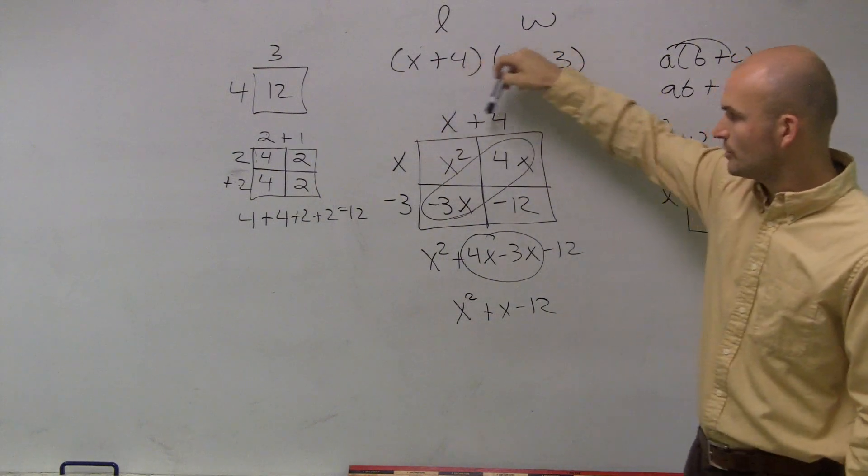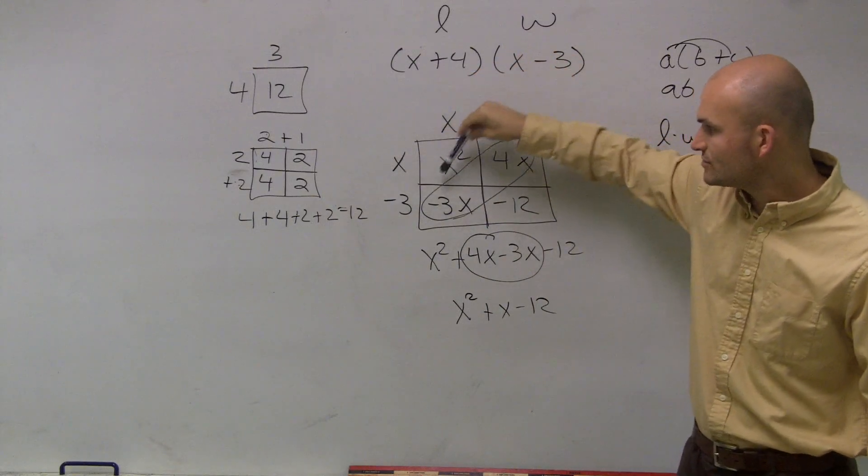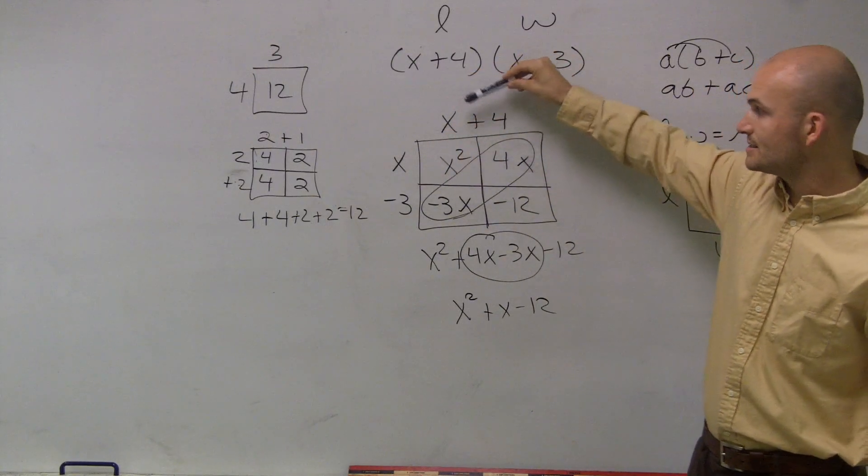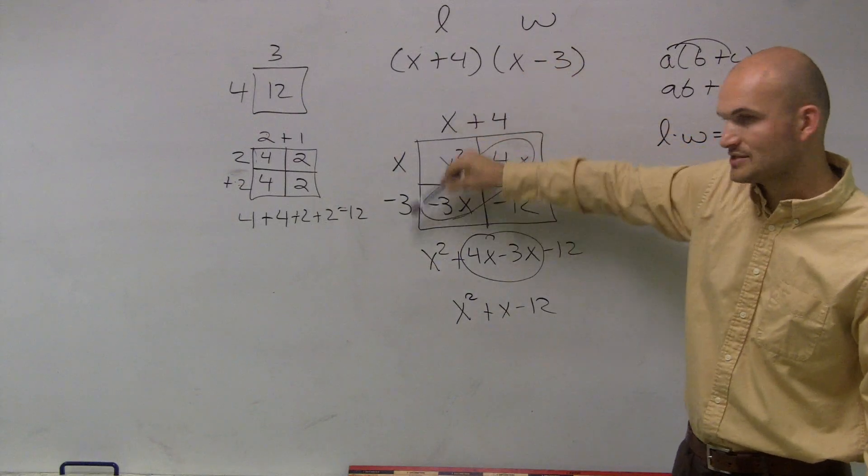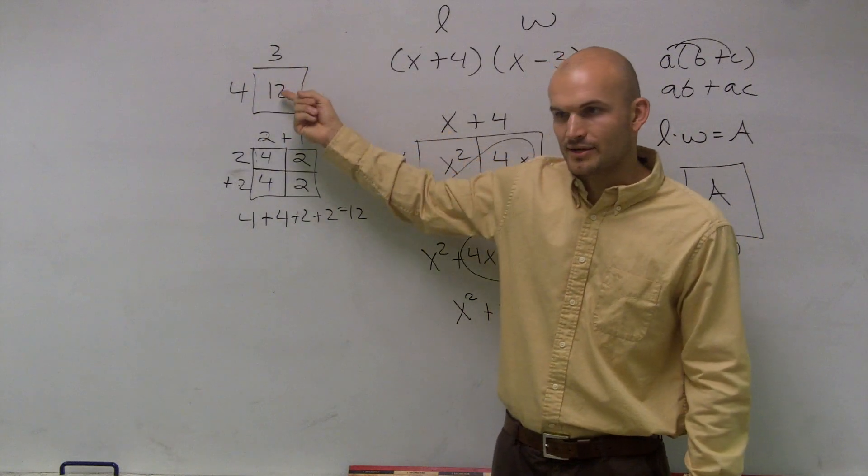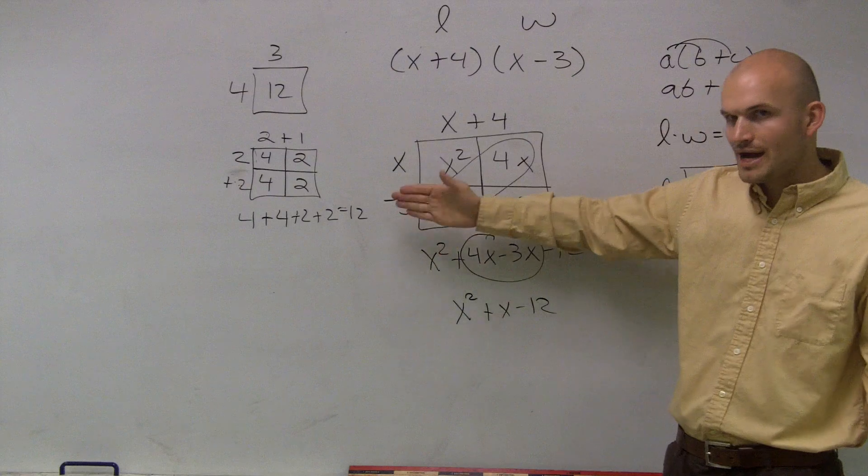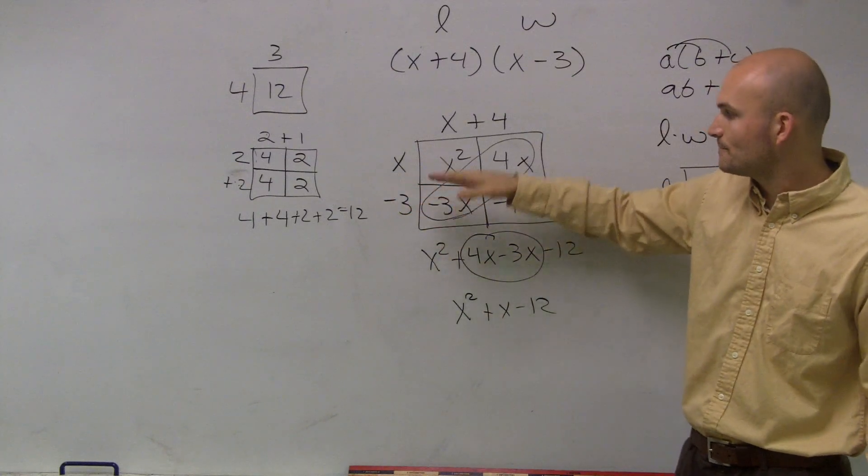So do you understand how I put them on the box? If I was going to multiply this times this, this represents now the area. This is one side and that's one side. However, this is easy to find the area, right? You just multiply that length times what? Got the area. Well, now we have x plus 4 and x minus 3. So how do we do that, right?